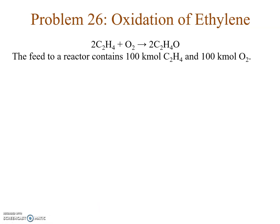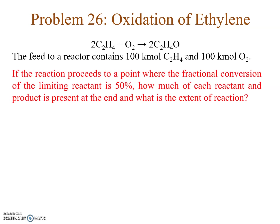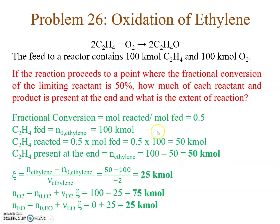Now, if the fractional conversion of the limiting reactant (ethylene) is 50%, then 50 kilo moles reacts and 50 kilo moles remains. The extent of reaction: ζ = (Ni − Ni₀) / νi = (50 − 100) / (−2) = 25 kilo moles. Using ζ = 25, the final oxygen = 100 + (−1)(25) = 75 kilo moles. Initial ethylene oxide = 0, so final ethylene oxide = 0 + (1)(25) = 25 kilo moles.